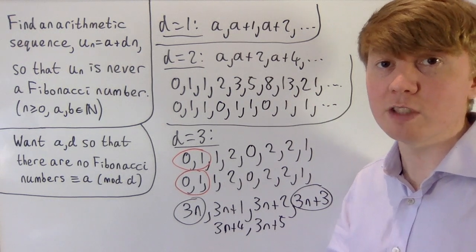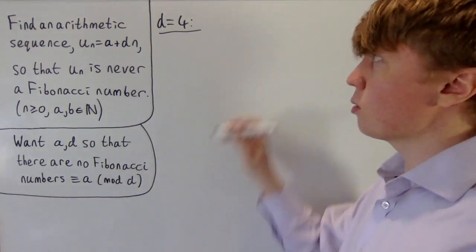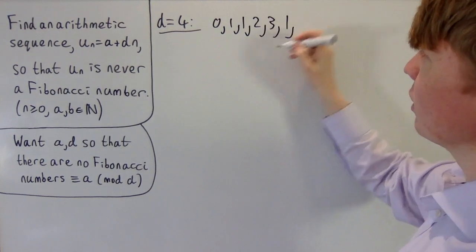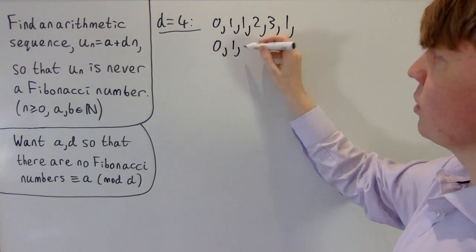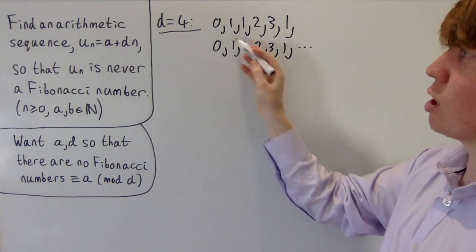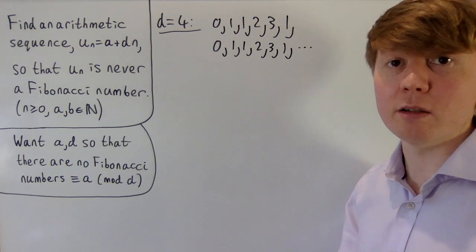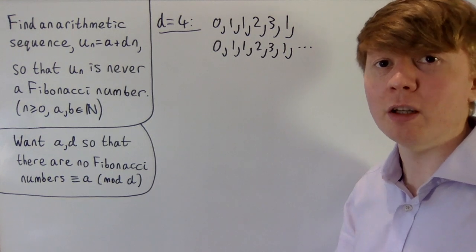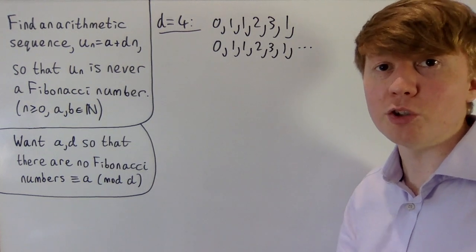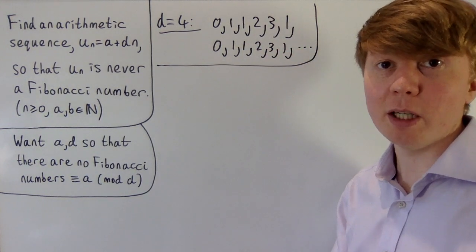For d equals 4, considering Fibonacci numbers modulo 4: 0, 1, 1, 2, 3, then 2 plus 3 is 1, 3 plus 1 back to 0, and 1 plus 0 gives 1. We've returned to the 0, 1 pair, and all of 0, 1, 2, and 3 are represented. So taking 4n, 4n+1, 4n+2, or 4n+3 as our n-th term won't work, and d equals 4 always has some overlap with the Fibonacci numbers.